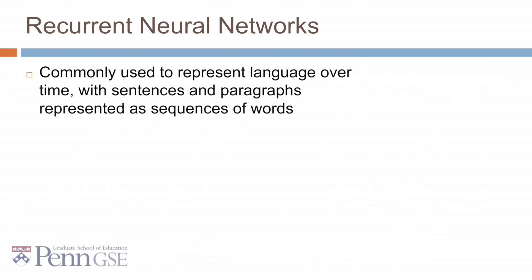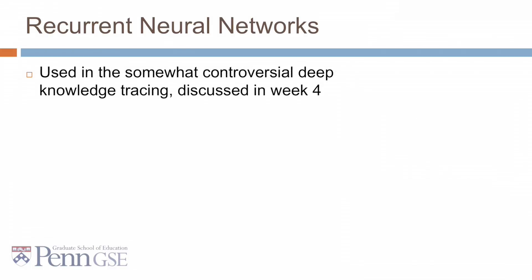RNNs are commonly used to represent language over time, with sentences and paragraphs represented as sequences of words. They're also used in the somewhat controversial deep knowledge tracing, discussed in week four, which represent a measure of change of knowledge over time.